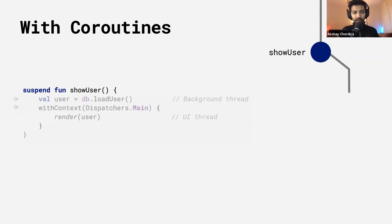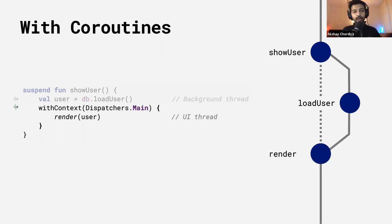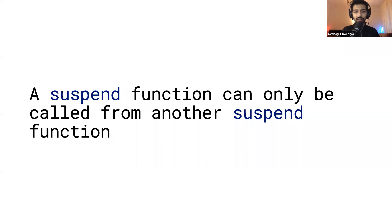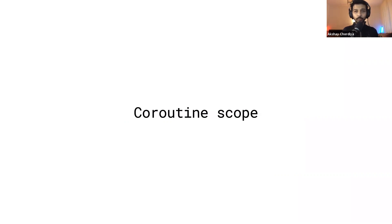Let's look at how this works internally. We start by calling the show user function. Since it's marked as suspend, it switches to a background thread specified while launching the coroutine. The user is loaded from the database on a different thread while the main thread continues without waiting — not freezing or blocking the user experience. Then it switches back to the main thread because of withContext, and calls the render function on the UI thread. The key thing to remember is a suspend function can only be called from another suspend function or from a coroutine scope. A coroutine scope represents the scope of coroutines — each coroutine needs a scope to run in. When the scope is destroyed, all running jobs inside it are stopped or canceled.